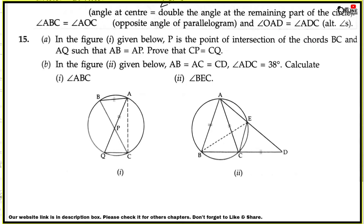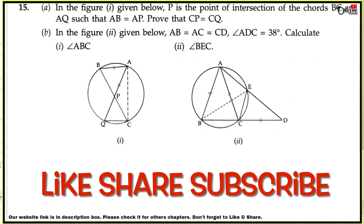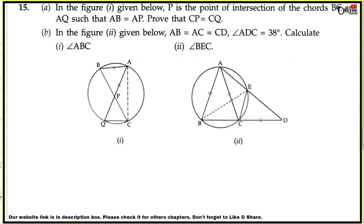The last one, sum number 15. In the given figure, P is the point of intersection of chords BC and AQ such that AB equals AP. Prove that CP equals CQ.